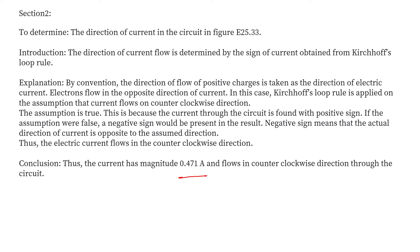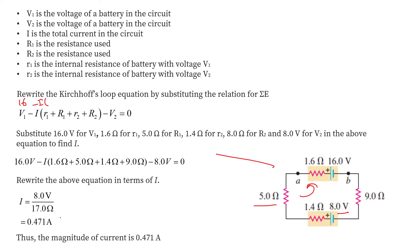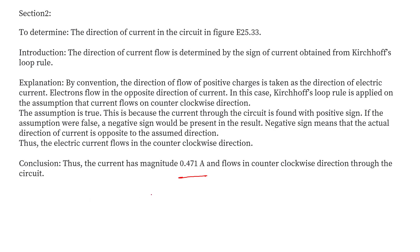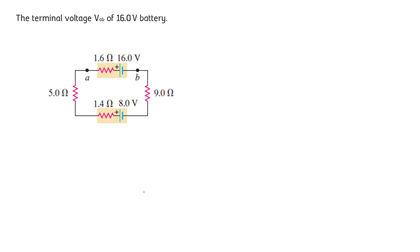If our assumption had been wrong, the value of current would be negative. Since we get a positive value, our assumption is confirmed correct and the current flows in the counterclockwise direction.